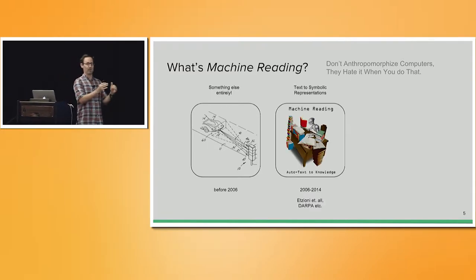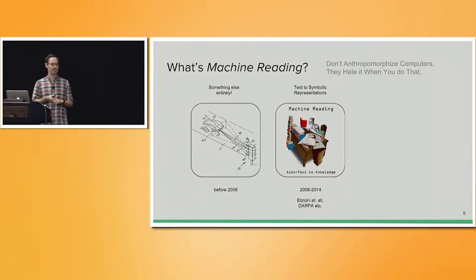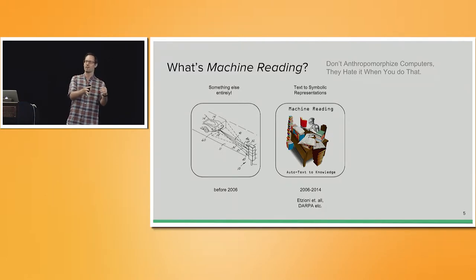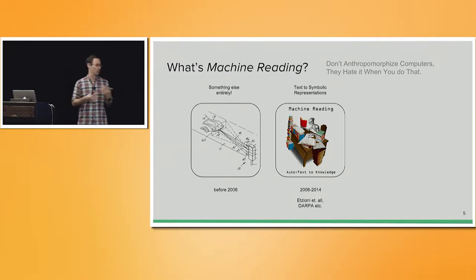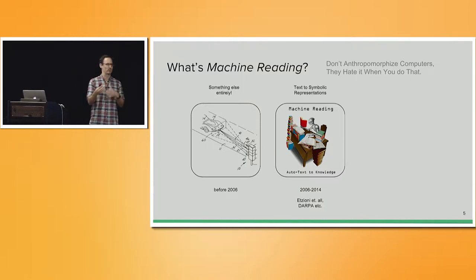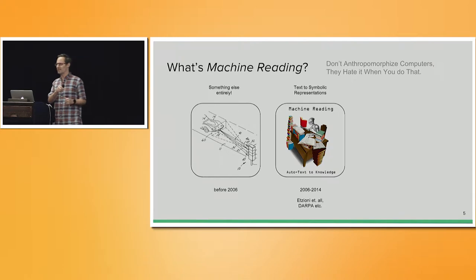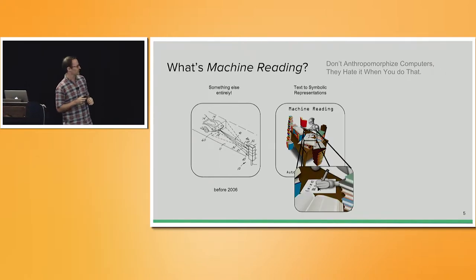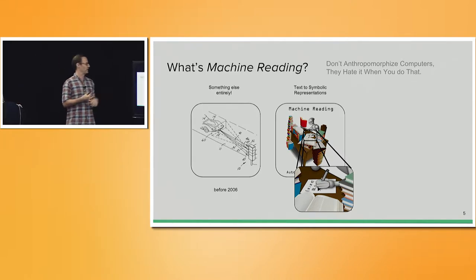What machine reading means now, at least in part, is based on work that Oren Etzioni at UW and others have been doing starting around 2006, where they used this term to describe essentially the process of going from unstructured text to some symbolic representation of the meaning of that text, such that that representation can be used downstream by a machine or a human alike. You can see that this logo here came out of the DARPA machine reading grant established around that time. The logo shows a robot writing a logical representation of what it has just read — mapping text to symbolic representations.